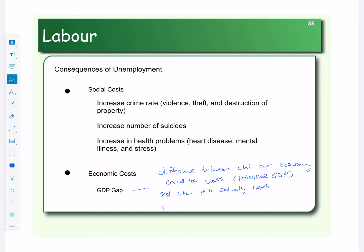So what we do is we take potential GDP minus actual GDP. And you can measure this GDP gap in nominal terms or real terms. Most commonly it's done in real terms so that we can compare that GDP gap over time, but you can really measure it in nominal or real. The difference is that it's looking at potential minus actual.